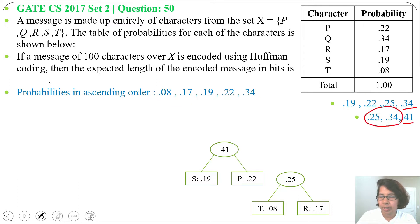Next, I will add these two, 0.25 and 0.34. 0.25 is already there, 0.34 I will write on the right side of it. After addition, I will get 0.59.